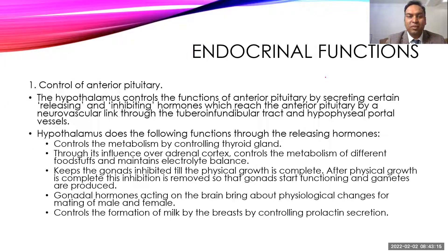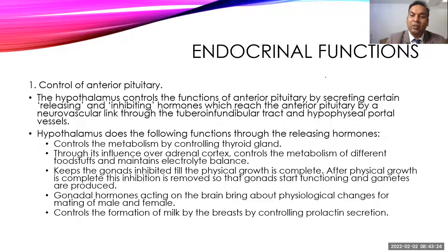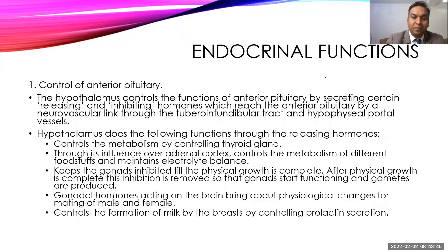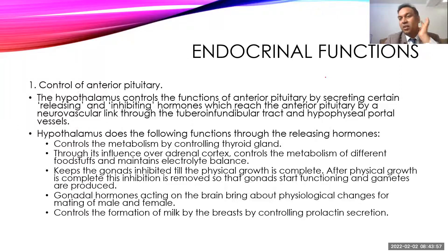The hypothalamus releases thyrotropin-releasing hormone (TRH), which acts on the anterior pituitary to increase release of thyroid-stimulating hormone (TSH), which then acts on the thyroid gland to increase thyroxine release. It also releases corticotropin-releasing hormone (CRH), which acts on the anterior pituitary to release ACTH (adrenocorticotropic hormone).